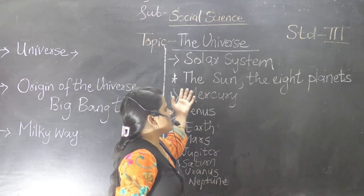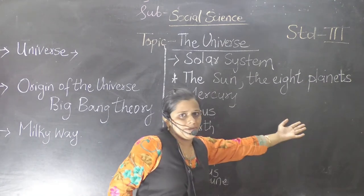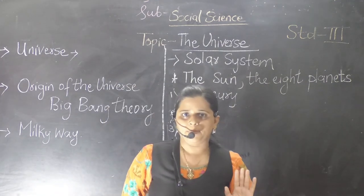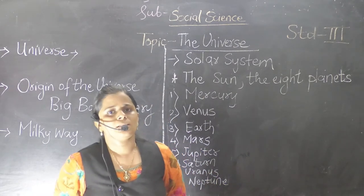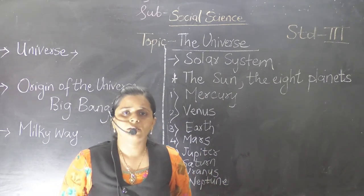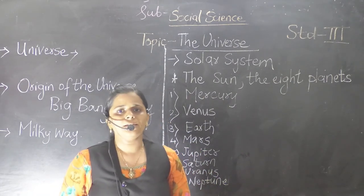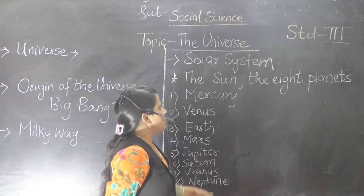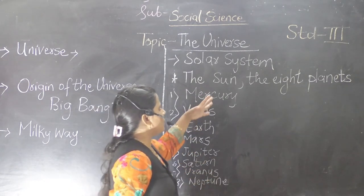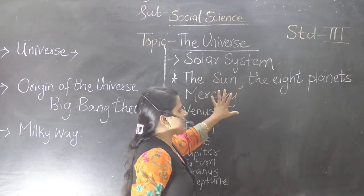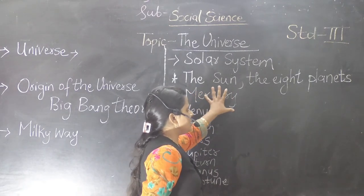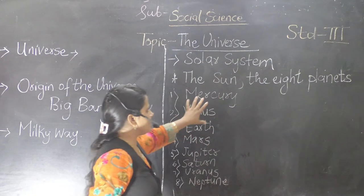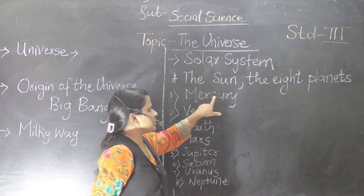So the sun is the center of the eight planets. The sun is also known as a star because it produces light and heat. Now we will see which planets revolve around the sun. The sun is the center of all eight planets.